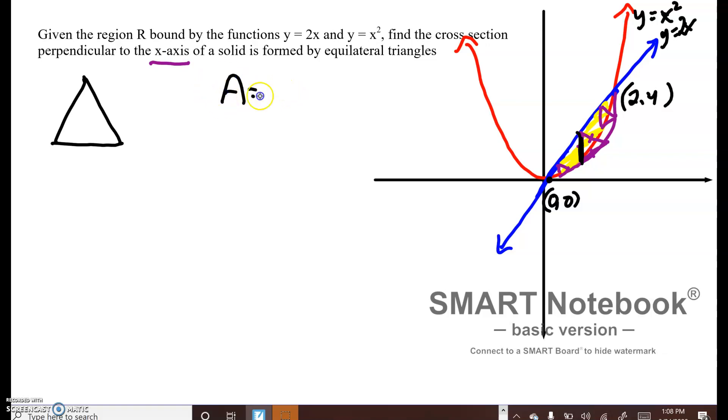The area of a triangle is base times h divided by 2, and if I integrate the area, that gives me the volume. We're going to write off to the side that b equals 2x minus x squared.